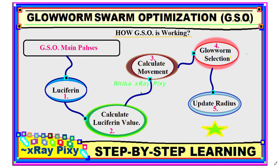To summarize, the main phases of the Glowworm Swarm Optimization algorithm are: first, initialize the population in the solution space; then calculate fitness values and update luciferin values for each candidate; then update the movement and position; and finally update the radius range, so that in the next iteration glowworms can easily find others in the solution space. That's all about this video. In another video we will try to understand this algorithm using a numerical example. If you have any questions, you can comment below. Thanks for watching.